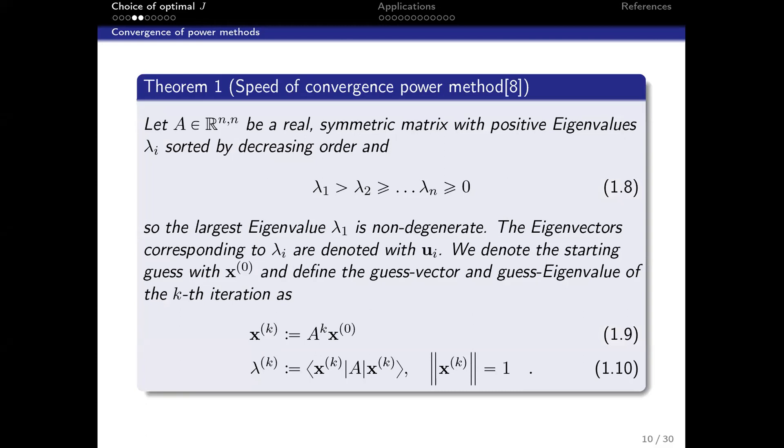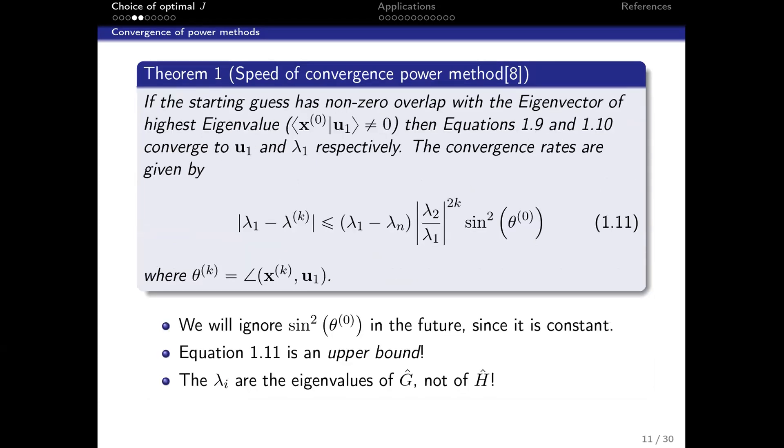If you go back to linear algebra textbooks for the speed of convergence of the power method, we look at the eigenvalues of our projector, not of the Hamiltonian. We look at upper bounds for convergence speed. It depends on the angle between starting guess and final solution, the spread, and the ratio of the first and second eigenvalue. This is an upper bound, so low λ₃ is better, but long-term behavior is dominated by these ratios.